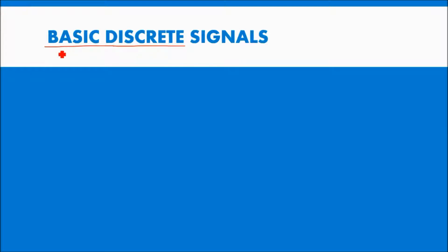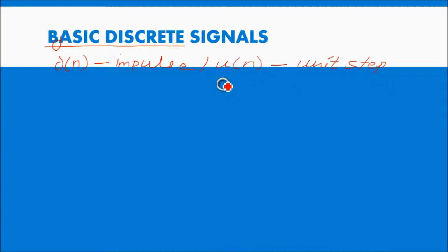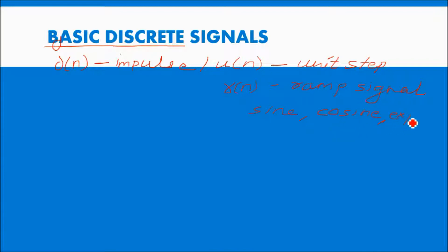There are some basic discrete signals in DSP. The basic signals are delta of n, that is called the impulse signal, then u of n, that is the unit step signal, and r of n, the ramp signal. As well as sine wave, cosine wave, and exponential. Those are the basic signals in DSP.